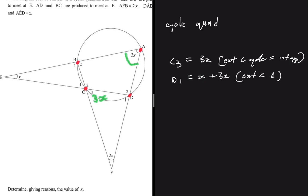So now in triangle CDF, let me just highlight triangle CDF, we're saying that d1 equals x plus 3x, and that will equal 4x. So let's put 4x here instead.